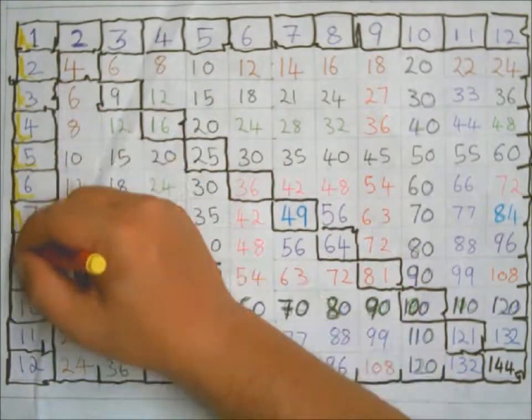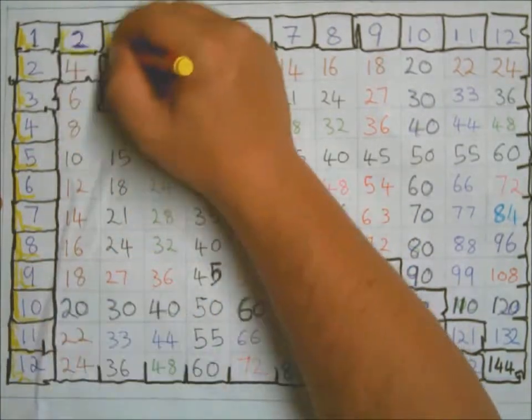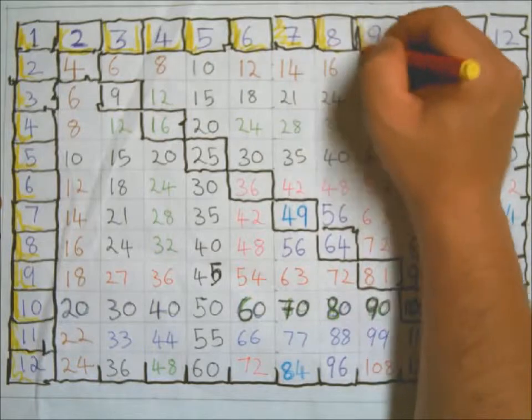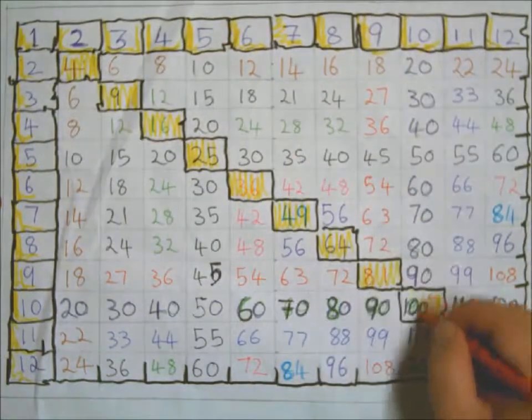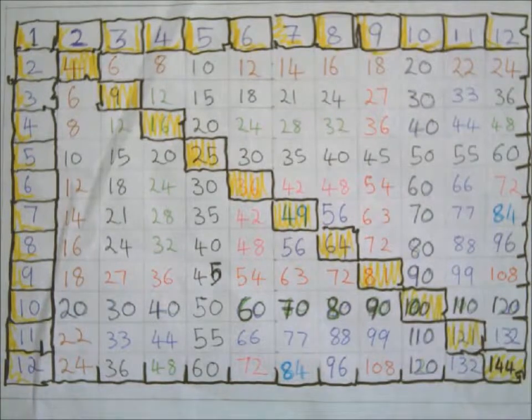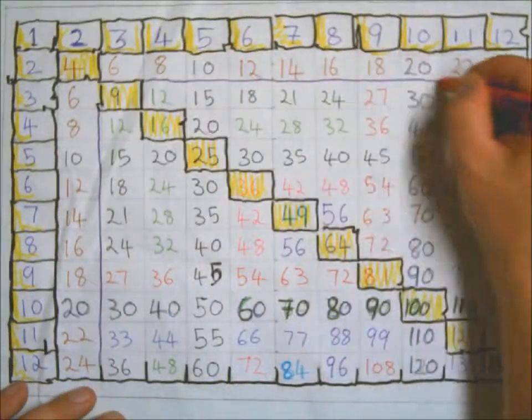What I've done there is colored in the diagonals. What's good about the diagonals of course is that they are the square numbers. You can't really see them all - 16 and 36 are in there somewhere.